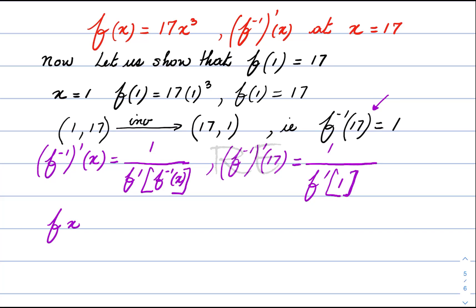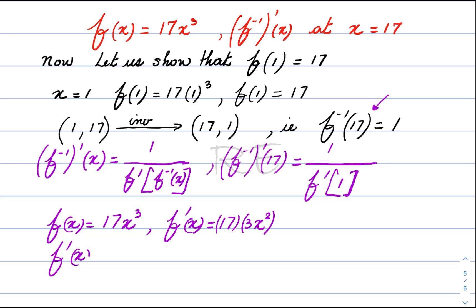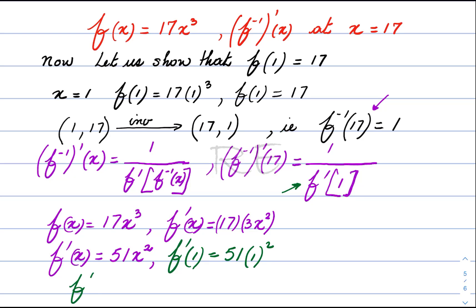We are going to find the derivative of f of x. The function is f of x equals 17x cubed. The derivative of f of x is equal to 17 times 3x squared, which gives us 51x squared. And when x is equal to 1, the derivative of f of x is equal to 51 times 1 squared, which is just 51. So f prime of 1 is equal to 51.